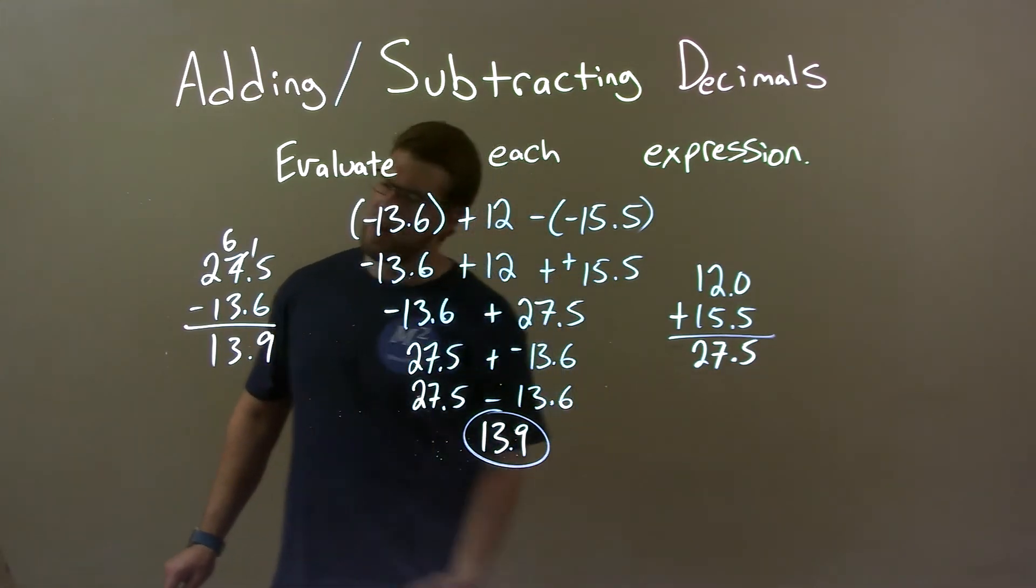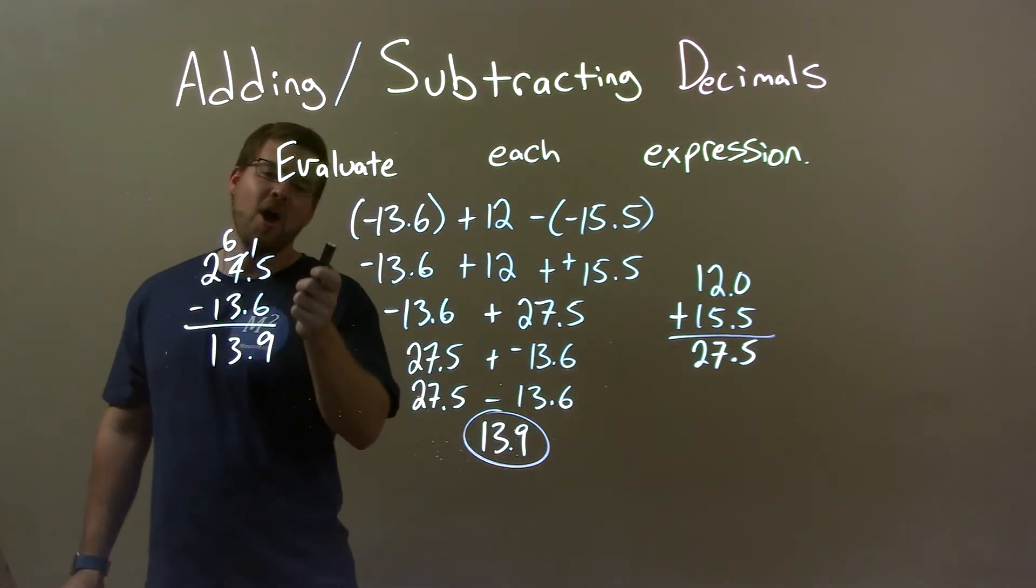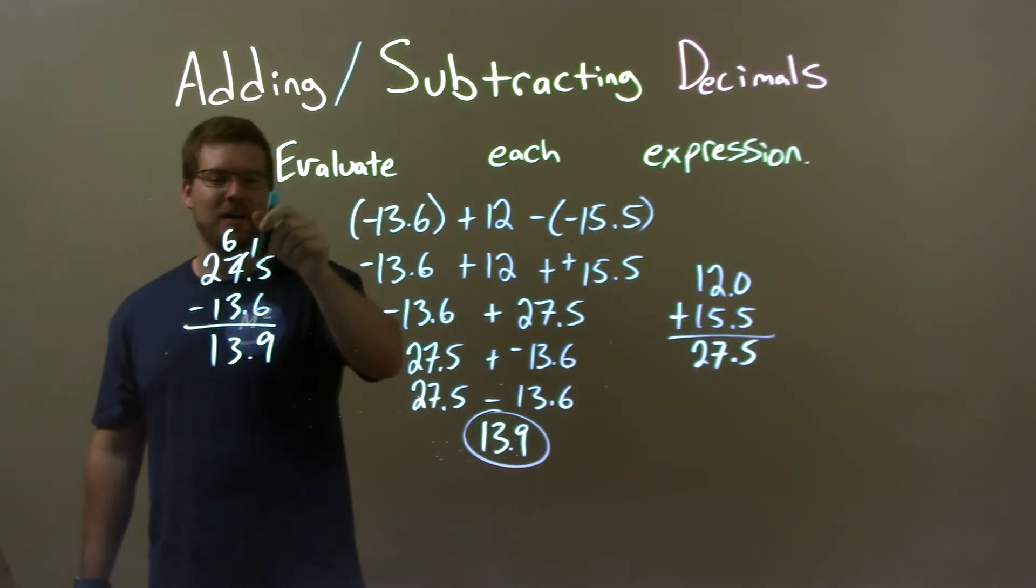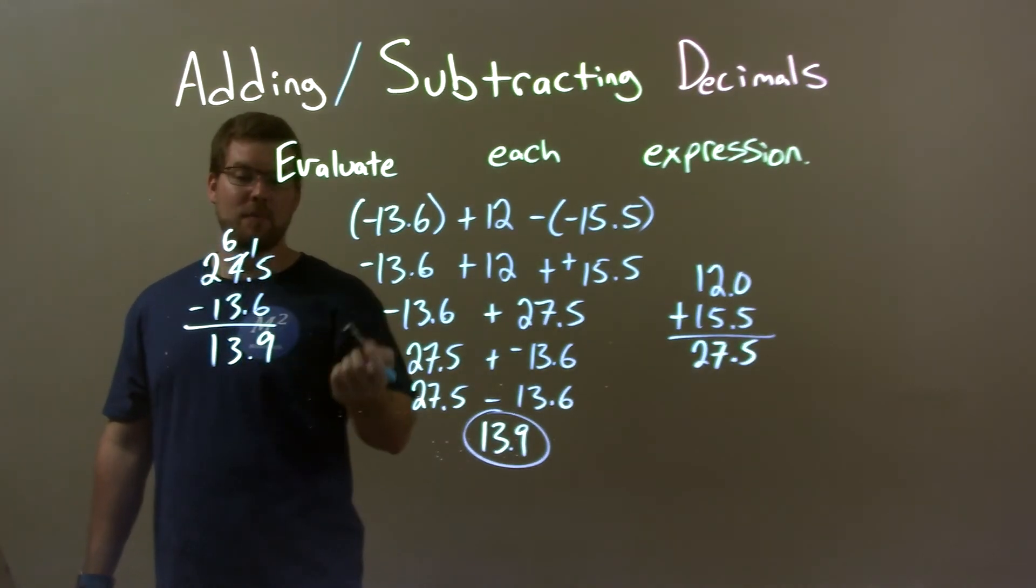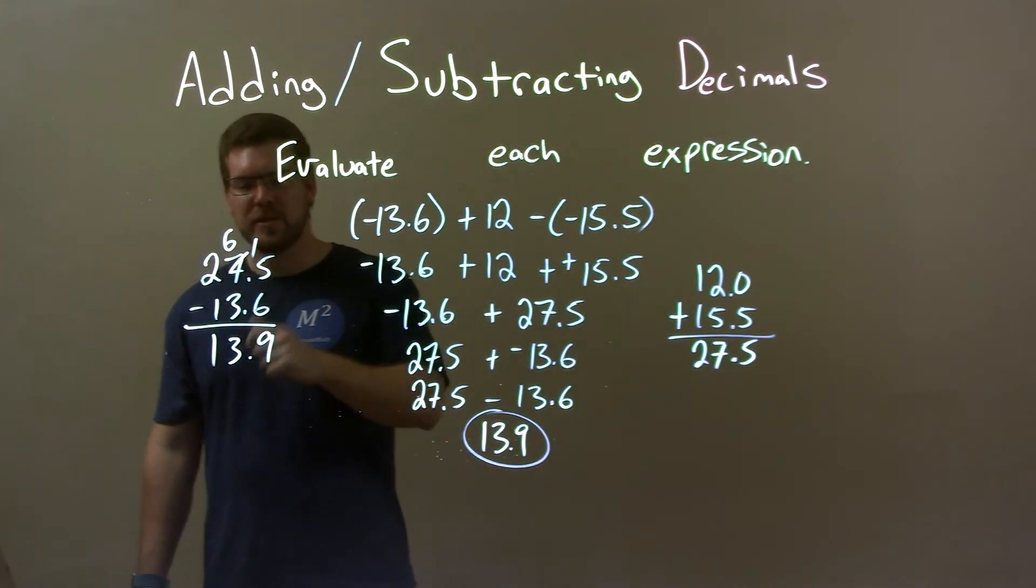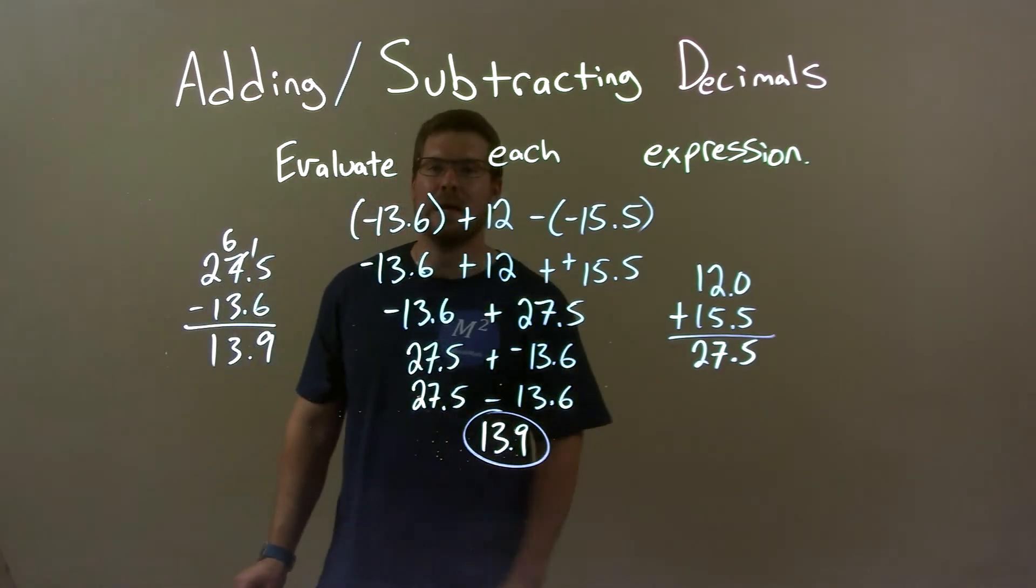They mean the same thing. Then I moved over here and subtracted. So I have 27.5 minus 13.6. Got 13.9. So 13.9 is my final answer.